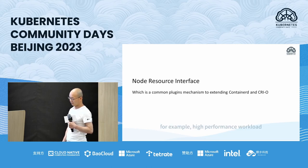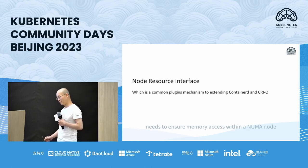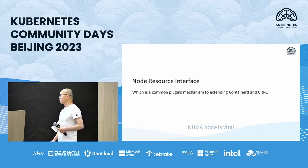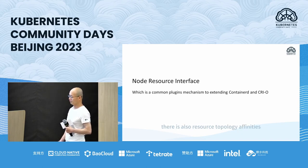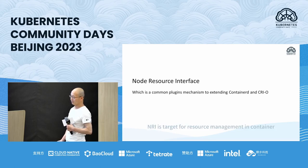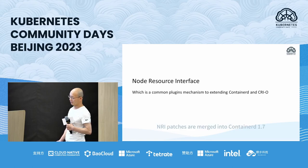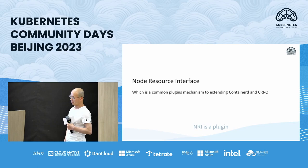For example, high-performance workloads need to ensure memory access within a NUMA node, and allocating the CPU of the container to the same NUMA node is vital. In addition to NUMA node alignment, there is also resource topology affinity such as CPU core and L3 cache. NRI is targeted for resource management at the container runtime level. NRI patches are merged into containerd 1.7 release already.